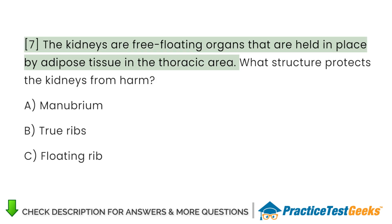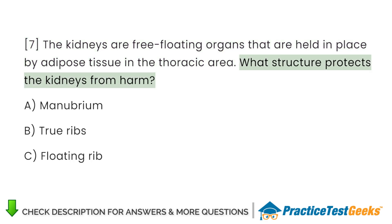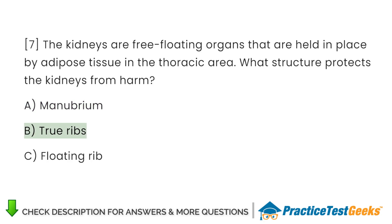The kidneys are free-floating organs that are held in place by adipose tissue in the thoracic area. What structure protects the kidneys from harm? A. Manubrium. B. True ribs. C. Floating rib.